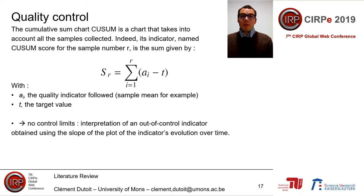For the cumulative sum (CUSUM) chart, it takes into account all samples collected, and the quality indicator is given in slide seventeen. This chart has several parameters. Its particularity is that there is no control limit — the interpretation of an out-of-control signal is obtained using the slope of the plot.